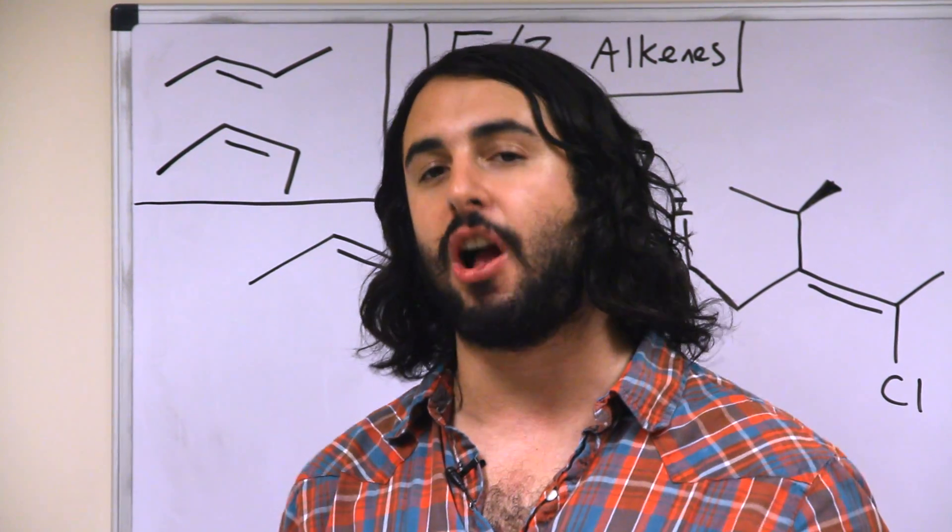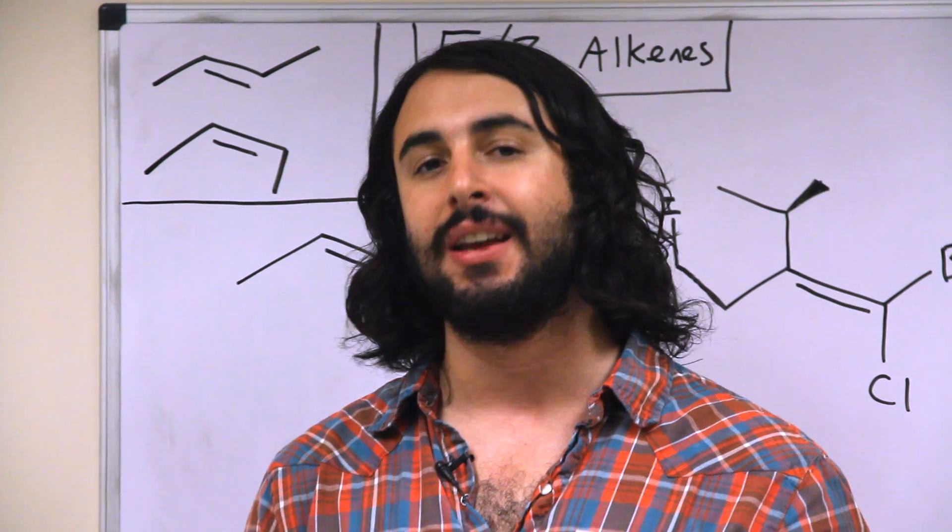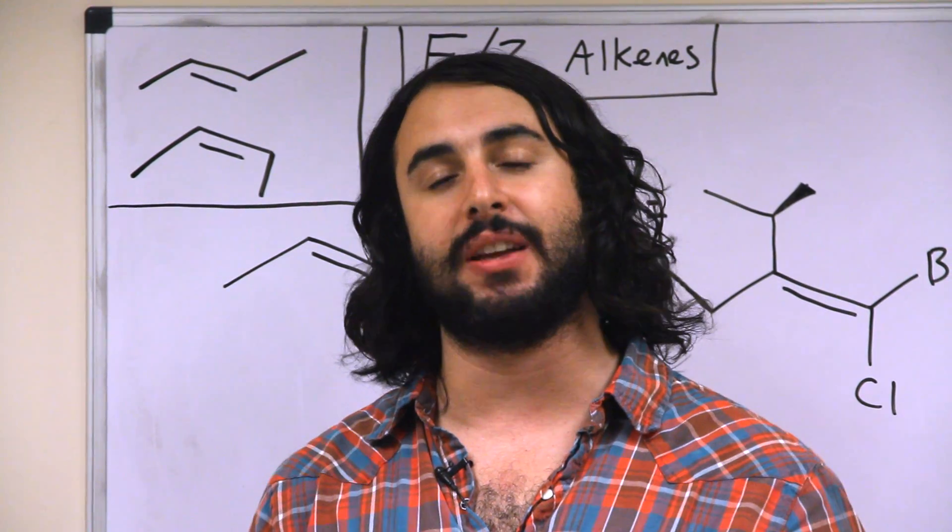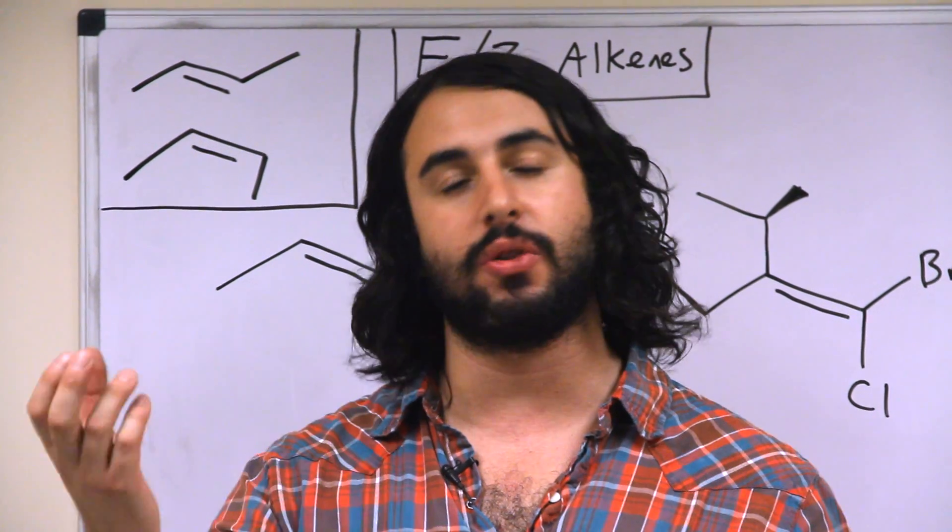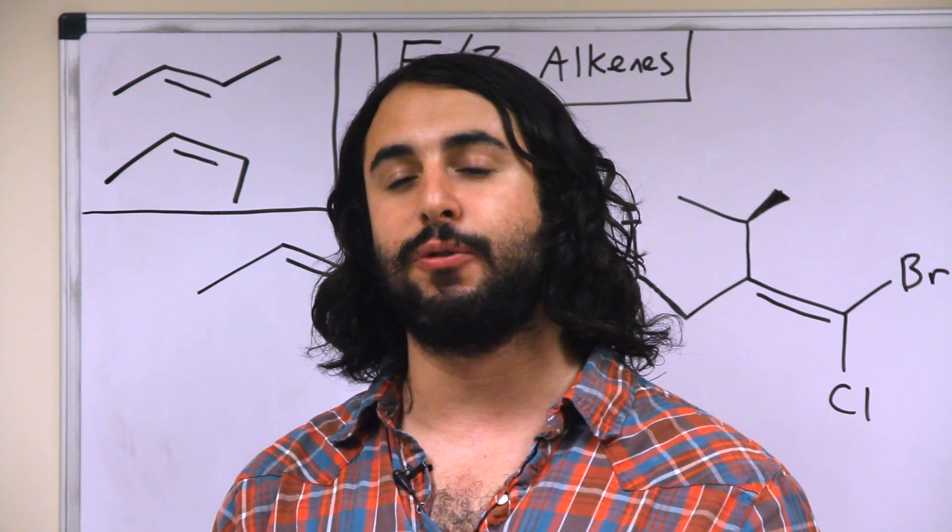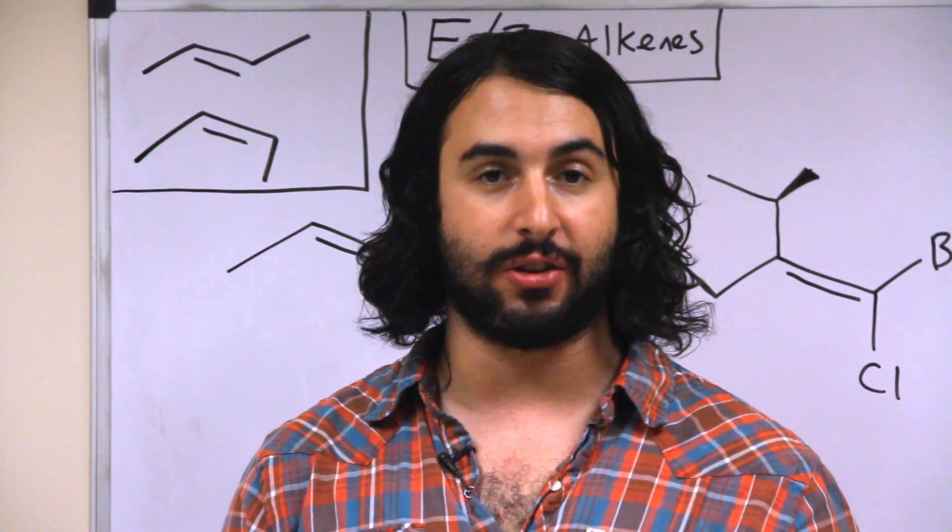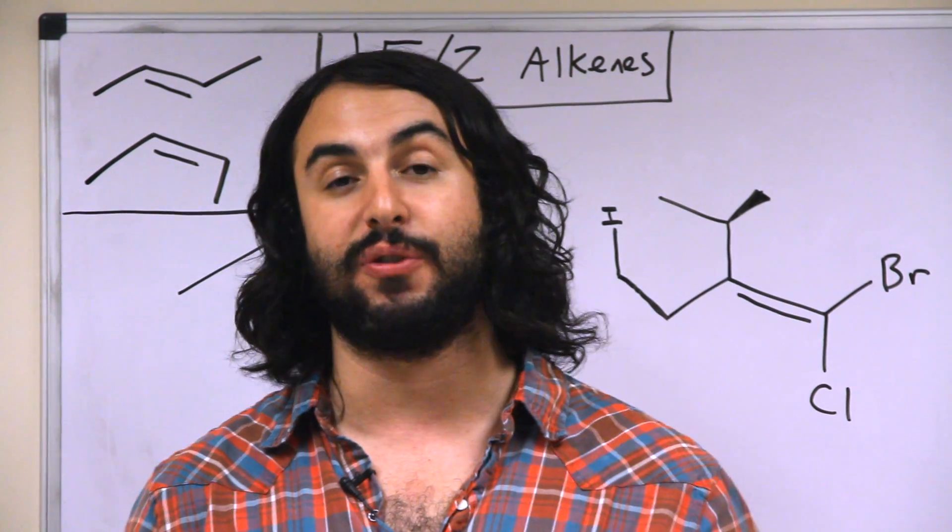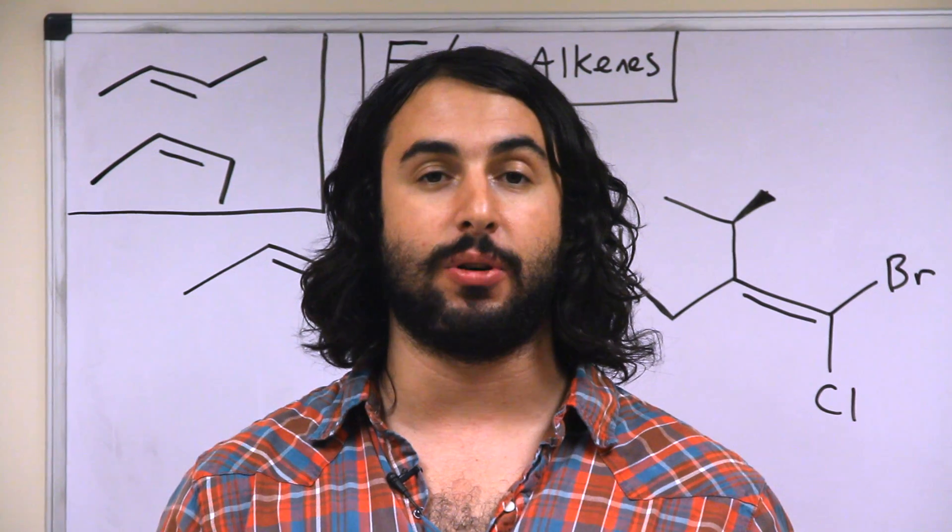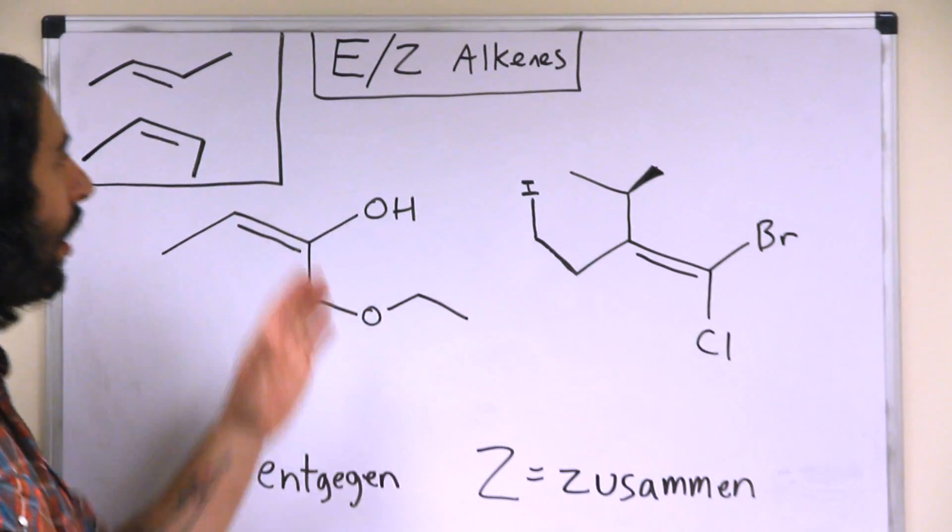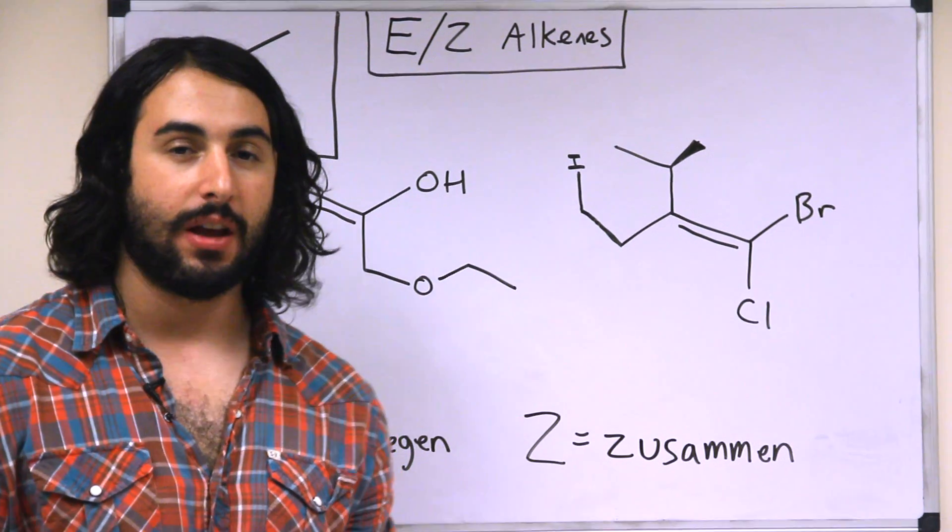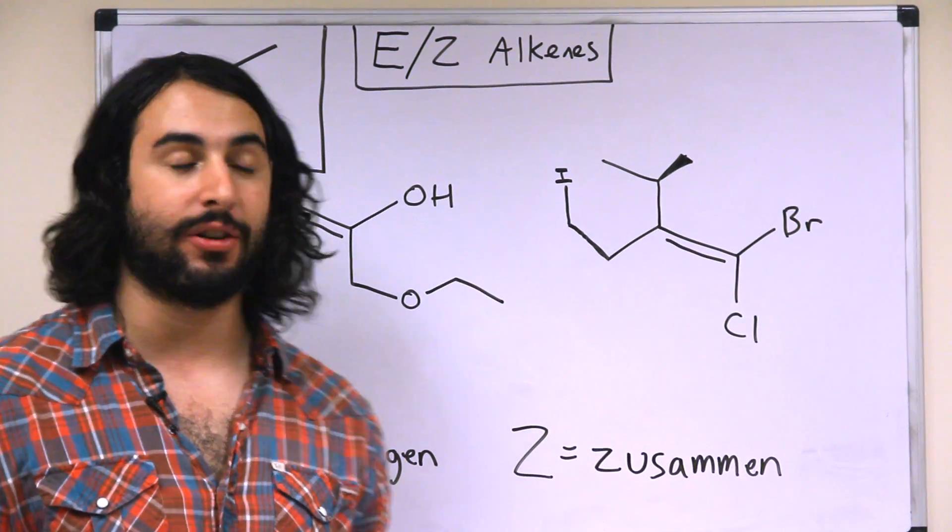However, if we're looking at a tri- or tetra-substituted alkene, cis and trans become ambiguous because then it's a question of what is cis to what and what is trans to what. So we're going to need a form of absolute terminology or some absolute configuration to be able to label any given alkene, and so we're going to need to understand E and Z as a way of labeling alkenes.